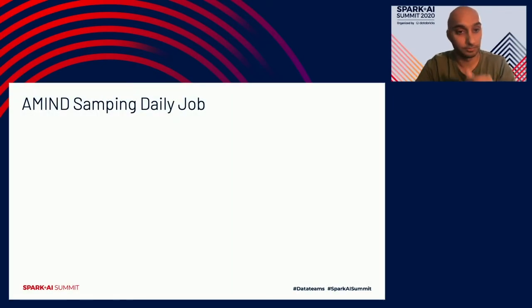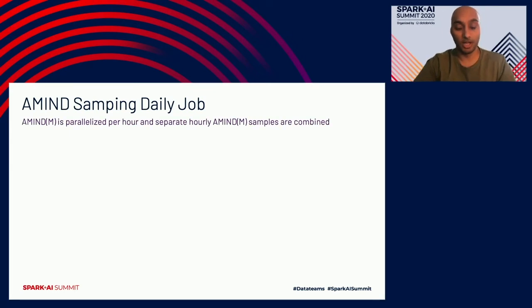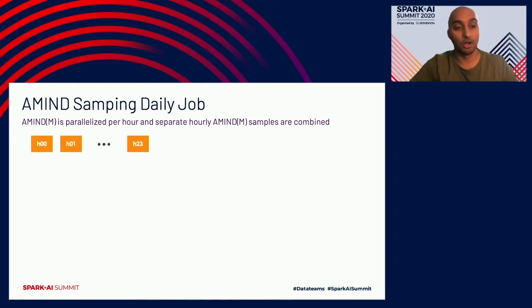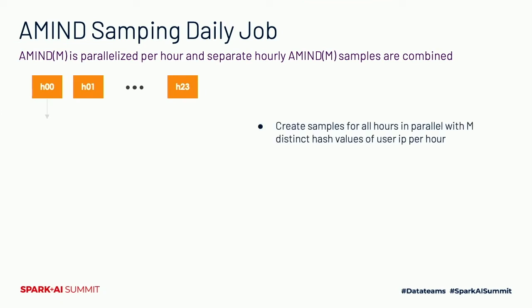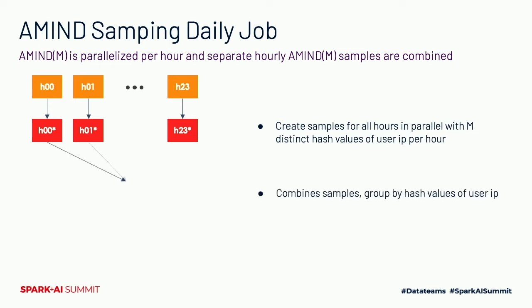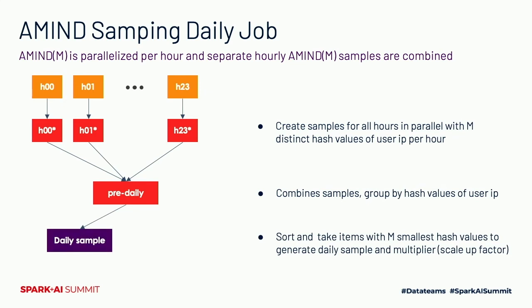The sampling daily job is parallelized for every single hour individually, then the separate hours are combined to form a daily sample. We parallelize processing of all hours in Spark and generate sampled hours — each a sample dataset with up to m distinct hash values. We then group all hourly samples by hash values to generate a pre-daily sample. We sort and take up to m smallest hash values to generate a daily sample, and also generate a scalar factor using this algorithm, used later to relate sample results back to the original dataset.